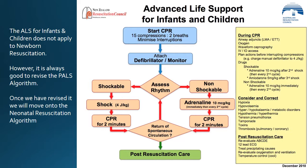Consider and correct: hypoxia, hypovolaemia, hyperkalaemia, metabolic disorders, hypothermia, tension pneumothorax, tamponade, toxins, thrombosis — pulmonary and coronary. Post-resuscitation care: re-evaluate ABCDE, 12-lead ECG, treat precipitating causes, re-evaluate oxygenation and ventilation, temperature control.